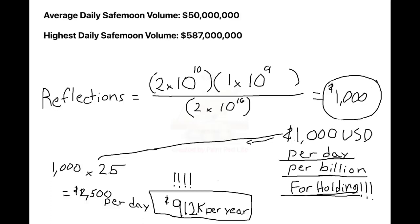Right now, it's only, what, like $7,000 for a billion SafeMoon? I think it's going to explode.